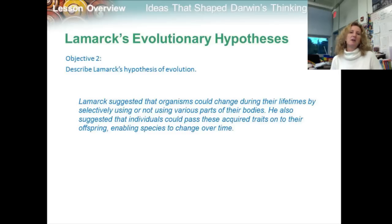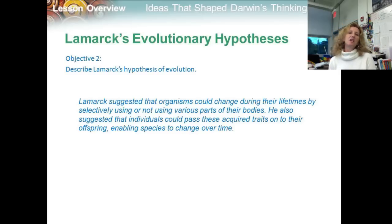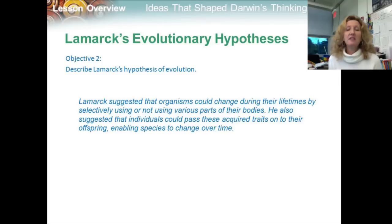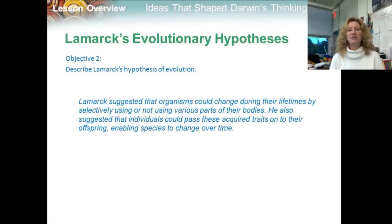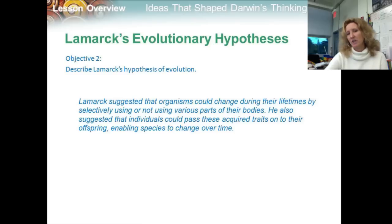So Lamarck's hypothesis of evolution: he suggested that organisms could change during their lifetimes by selectively using or not using various parts of their bodies, and that individuals could pass these acquired traits onto their offspring, enabling the species to change over time.